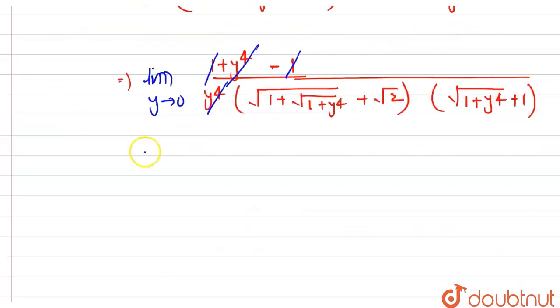If we put the value 0 in this question, the numerator is 1. This will become √(1 + √1) + √2, this is one term, and multiplied by this will be √(1 + 1) and this is 1 outside.